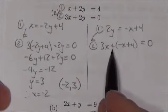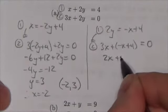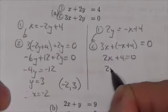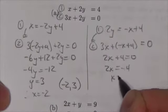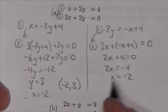So now 3x and negative x will be 2x plus 4 equals 0. Bring that over, 2x equals negative 4, x equals negative 2. That's totally consistent with what we had before.